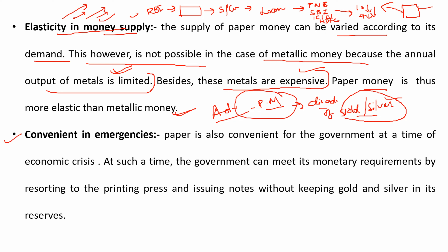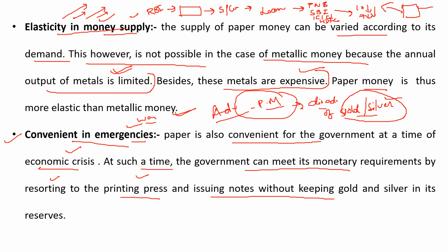The last advantage is convenient in emergencies. For example, in an economic crisis like the war between Russia and Ukraine — Ukraine's status is very bad and even Russia's financial condition is affected. For any country facing such an emergency, paper money is very convenient because the government can resort to printing new notes from a new printing press to sort out their monetary requirements, even without keeping gold and silver in reserves.